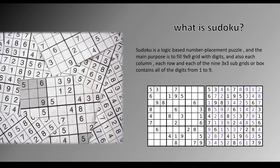What is Sudoku? Sudoku is a logic-based number placement puzzle. The main purpose is to fill a 9x9 grid with digits such that each column, each row, and each of the 9 3x3 grids or boxes contains all of the digits from 1 to 9. As you can see here, this is the solved one.